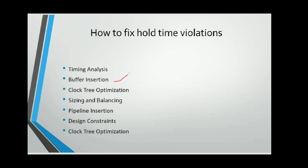Metastability is another serious consequence — a condition where the output is unpredictable and cannot be determined to be one or zero. Since each stage depends on the output of the previous stage, if the previous stage output is unpredictable, the next stage output is also unpredictable. This metastability can propagate throughout the entire design, making it a very critical issue. Hold time violations lead to all these problems.